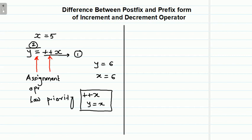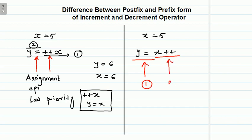Now if I do the same thing in postfix form — say x equals 5 and I write y equals x plus plus — here the assignment operation will be performed first, and then x plus plus will be done afterward. Whenever we are using increment or decrement operator in postfix form, the postfix operation is performed last, after executing all the other operations.